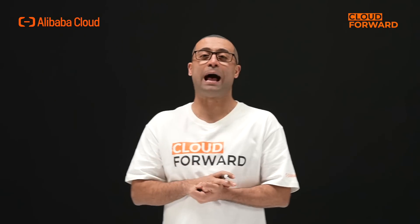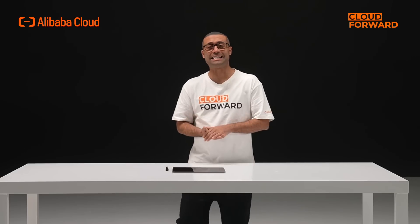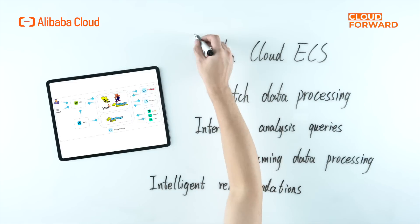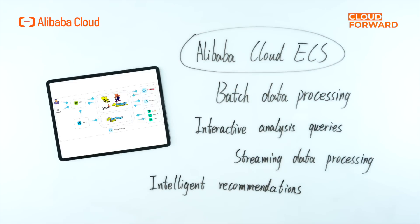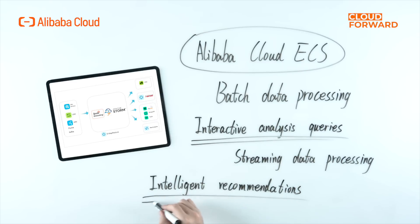Now let's talk about application scenarios. Whatever the Hadoop ecosystem and Spark can do, so can EMR. By its nature, it is a cluster service for Hadoop and Spark, so you can totally regard Alibaba Cloud ECS machines as your own private hardware. Use them for batch data processing, interactive analysis queries, streaming data processing, intelligent recommendations, and more.